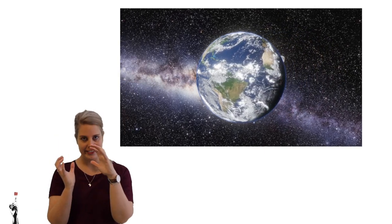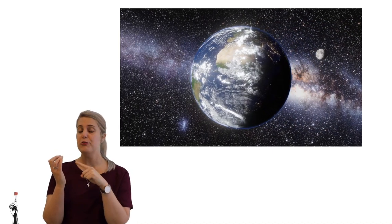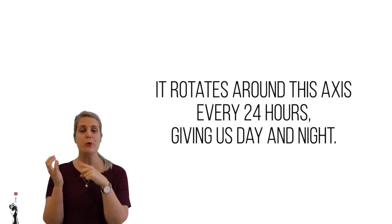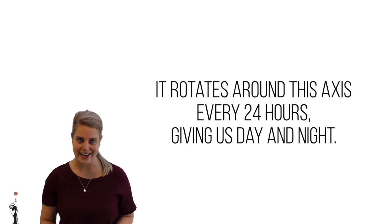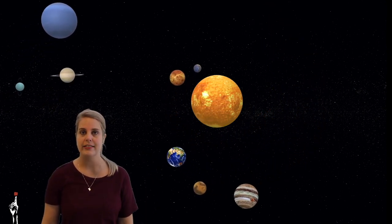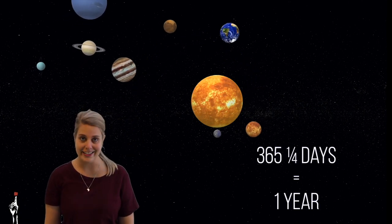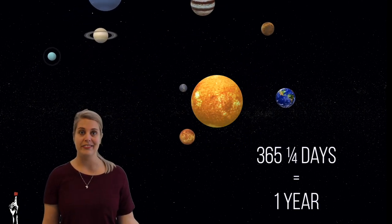The earth is tilted on its axis and it rotates on this axis over a duration of 24 hours — this rotation is what gives us day and night. While the earth is rotating on its axis it is also revolving around the sun, and this is what gives us our four seasons over a duration of 365 and a quarter days, which gives us our year. Back to the hot equator.